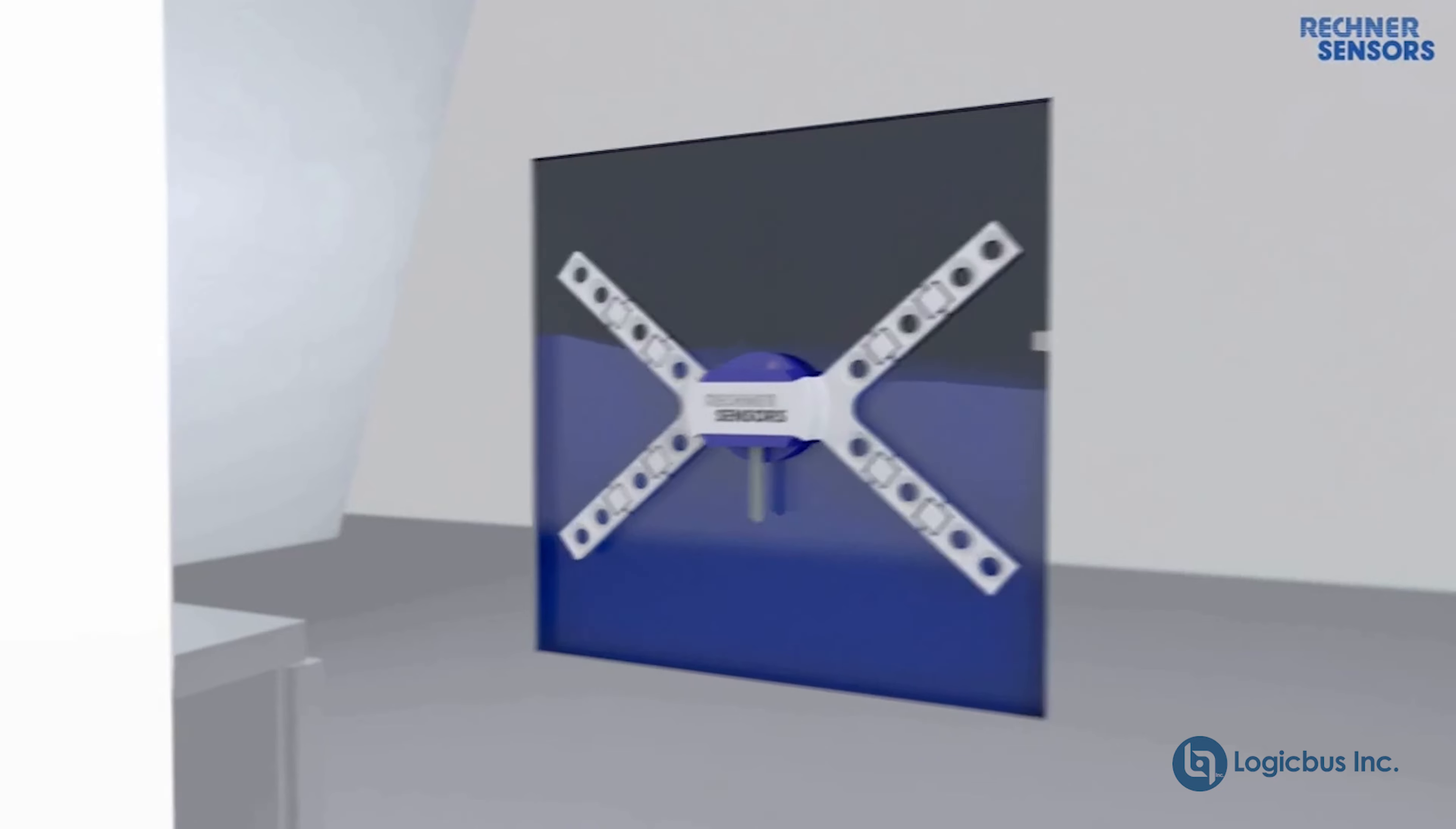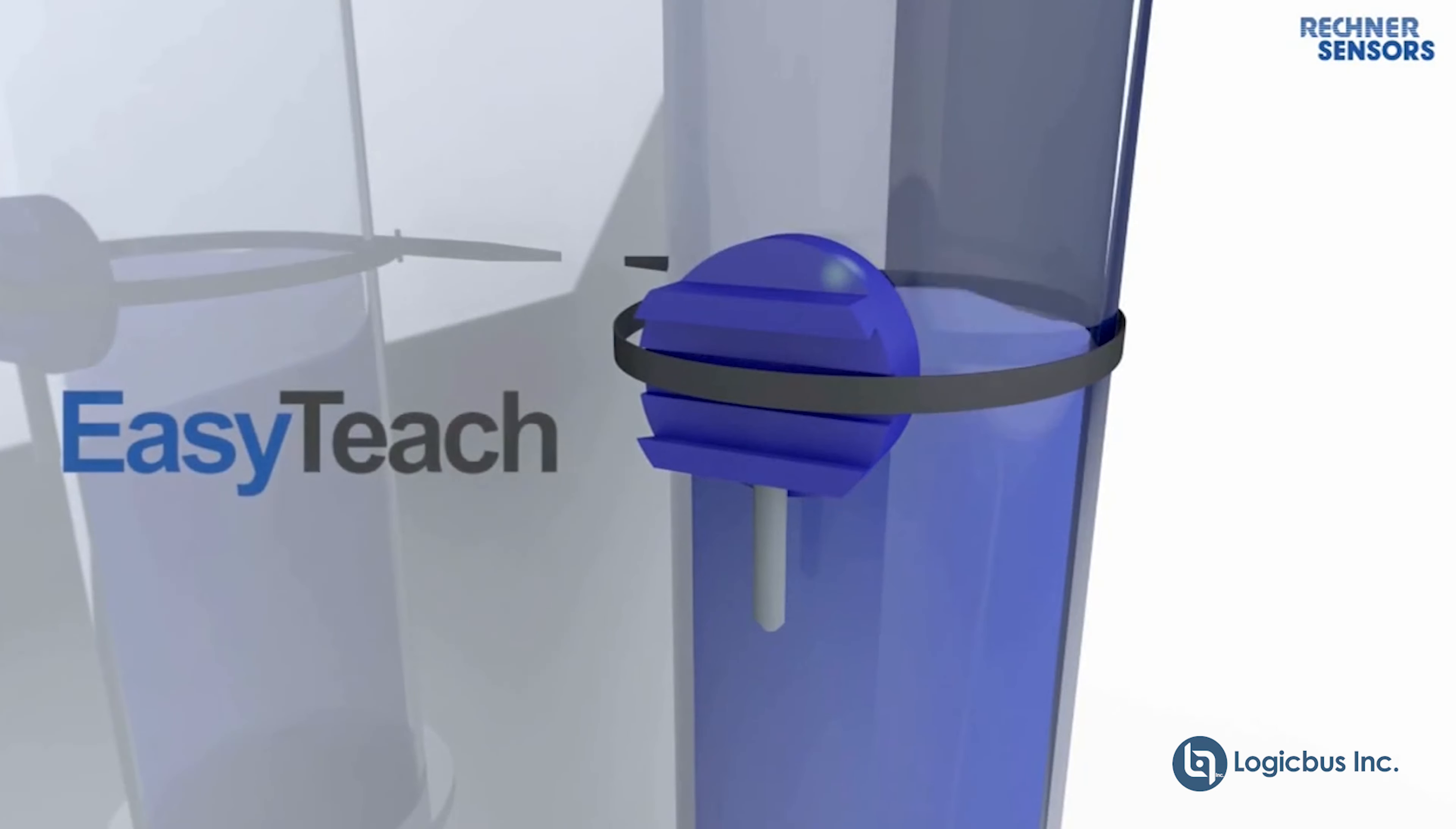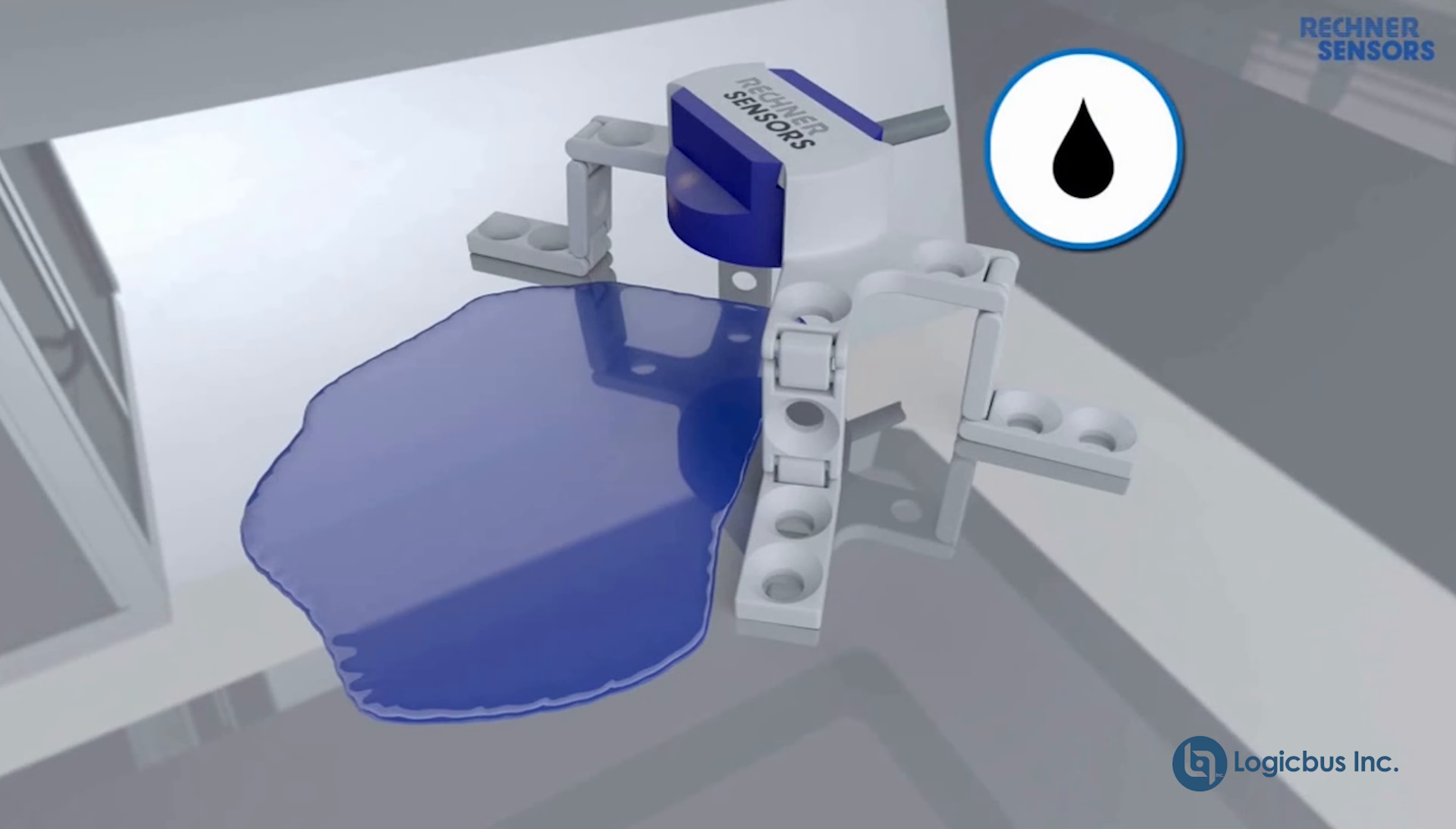The EasyMount Sensor is low-profile, watertight, easy to teach, easy to mount, remote teachable, mountable with a zip tie or on a standard rail, and additionally optimized for through-glass applications. It is the perfect sensor for your sensing problems.